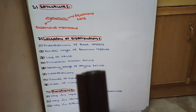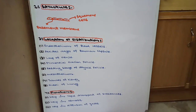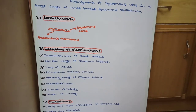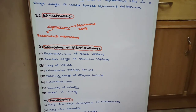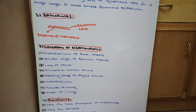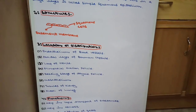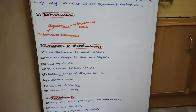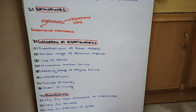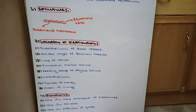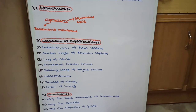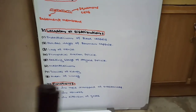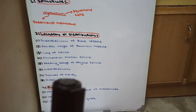Number four: the primordial ovarian follicle is lined by simple squamous epithelium. Number five: the resting stage of the thyroid follicle — when the thyroid follicle is in its resting stage it is lined by simple squamous epithelium, but when it becomes active, its epithelium changes from simple squamous epithelium. Number six: mesothelium — mesothelium is a serous membrane which is lined by simple squamous epithelium, and this serous membrane produces a serous fluid.